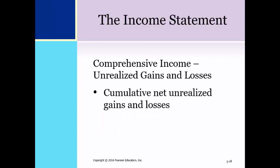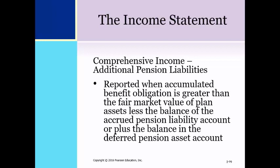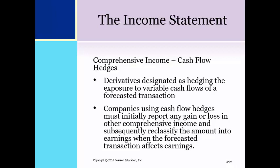Unrealized gains and losses on available-for-sale debt securities are reported in other comprehensive income. Additional pension liabilities are reported as other comprehensive income when the accumulated benefit obligation is greater than the fair market value of plan assets, less the balance in the accrued pension liability account, or plus the balance in the deferred pension asset account. Companies using cash flow hedges — derivatives designated as hedging the exposure to variable cash flows of a forecasted transaction — are required to initially report any gain or loss from a change in fair market value of the cash flow hedge in other comprehensive income, and subsequently reclassify the amount into earnings when the forecasted transaction affects earnings.